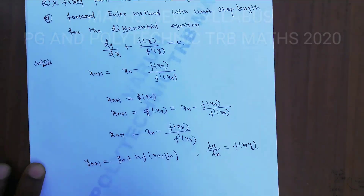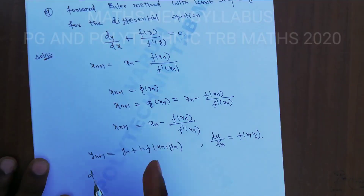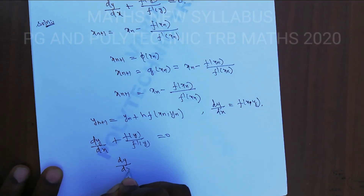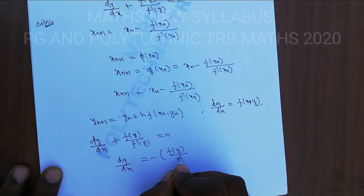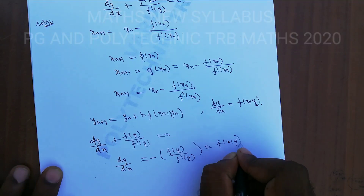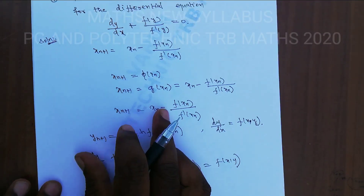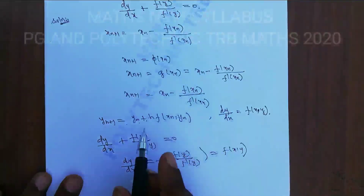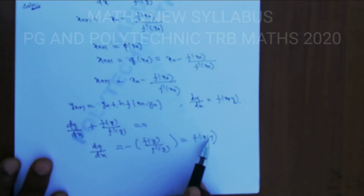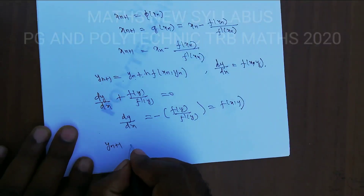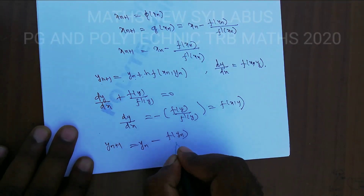Now we check the differential equation: dy/dx plus f(y) divided by f'(y) equals 0, so dy/dx equals minus f(y) divided by f'(y). This is f(x, y). With unit step size h = 1, the Euler formula gives y_{n+1} = y_n minus f(y_n) divided by f'(y_n). This matches the Newton-Raphson formula, confirming Option D is also correct.